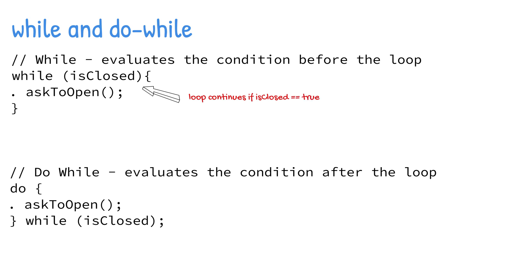In the first example, the while loop iterates as long as the isClosedvariable returns true. The loop continues to execute as long as isClosed is true, and once it returns false, the while stops executing the next loop. In the second example, the do-while loop also iterates as long as isClosed returns true, but the loop is first executed at least once before the condition is evaluated. Once isClosed returns false, the do-while stops executing the next loop.